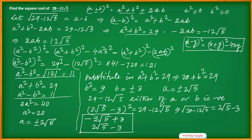Let us check the answer. a squared plus b squared equals 9 plus 20 equals 29. For the first answer: 9 plus 20 minus 12 root 5 — correct. For the second answer: 9 plus 20 minus 12 root 5 — also correct. Both verify successfully.